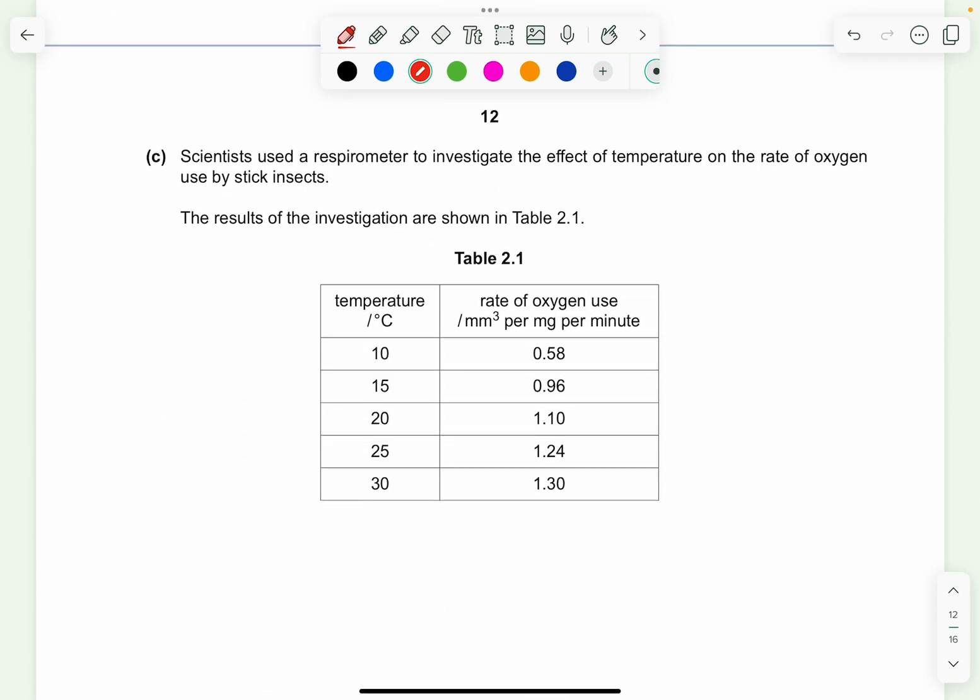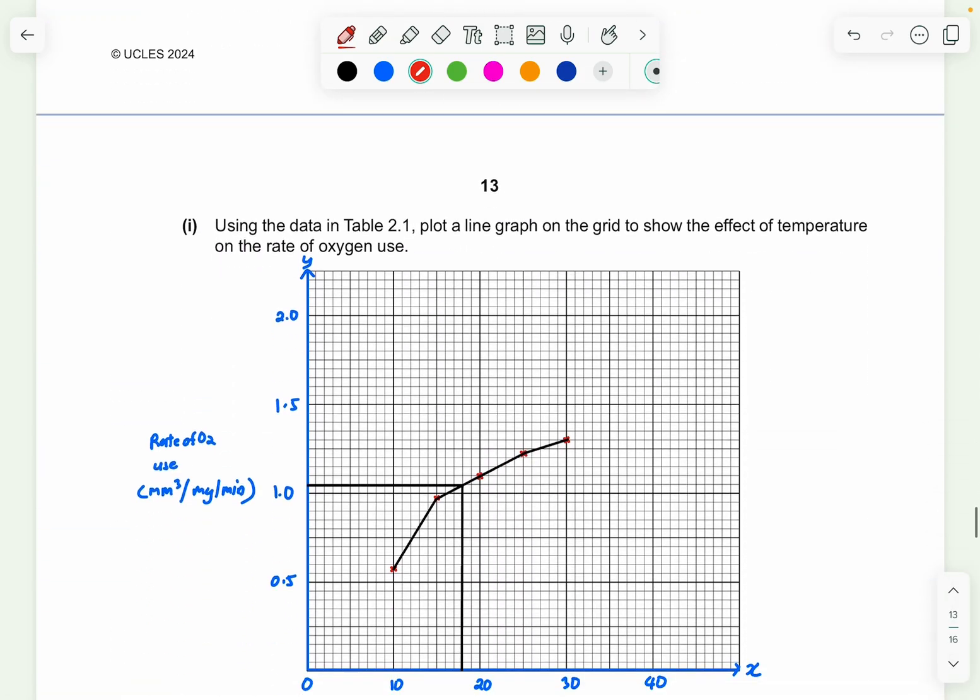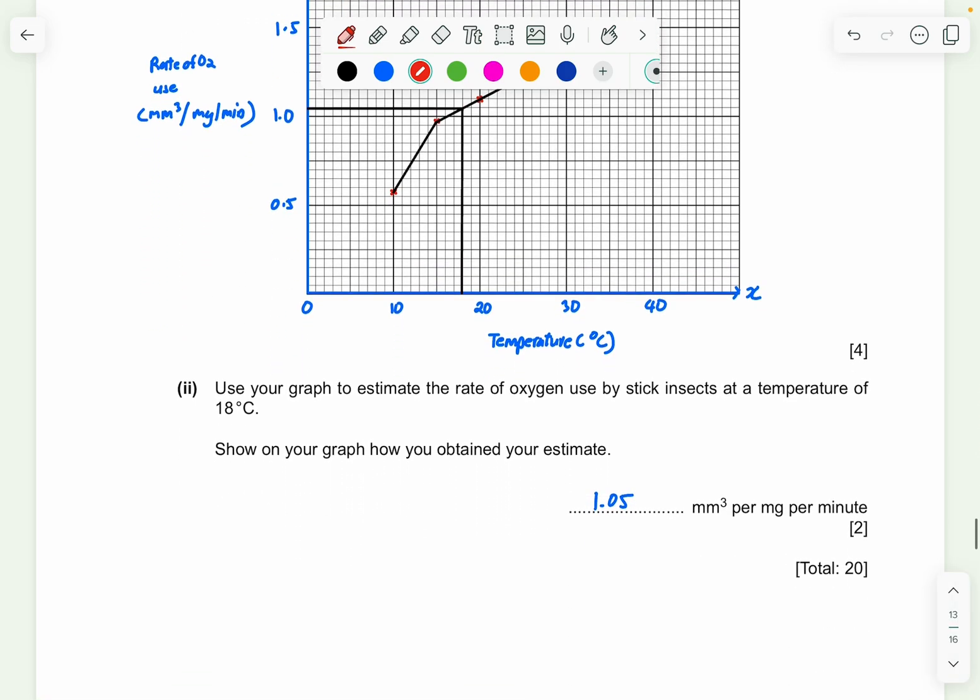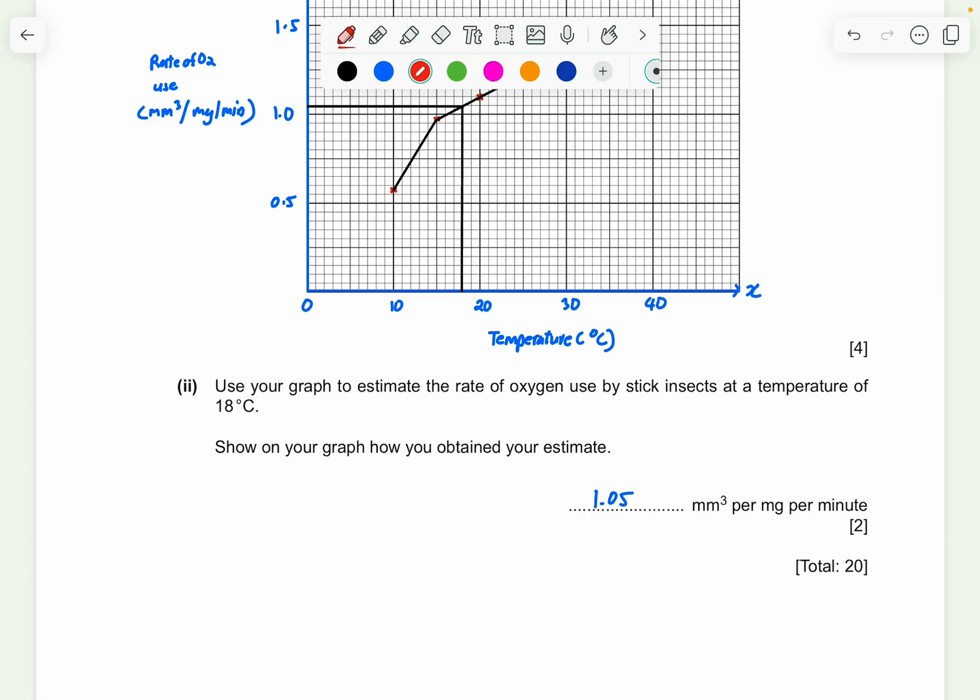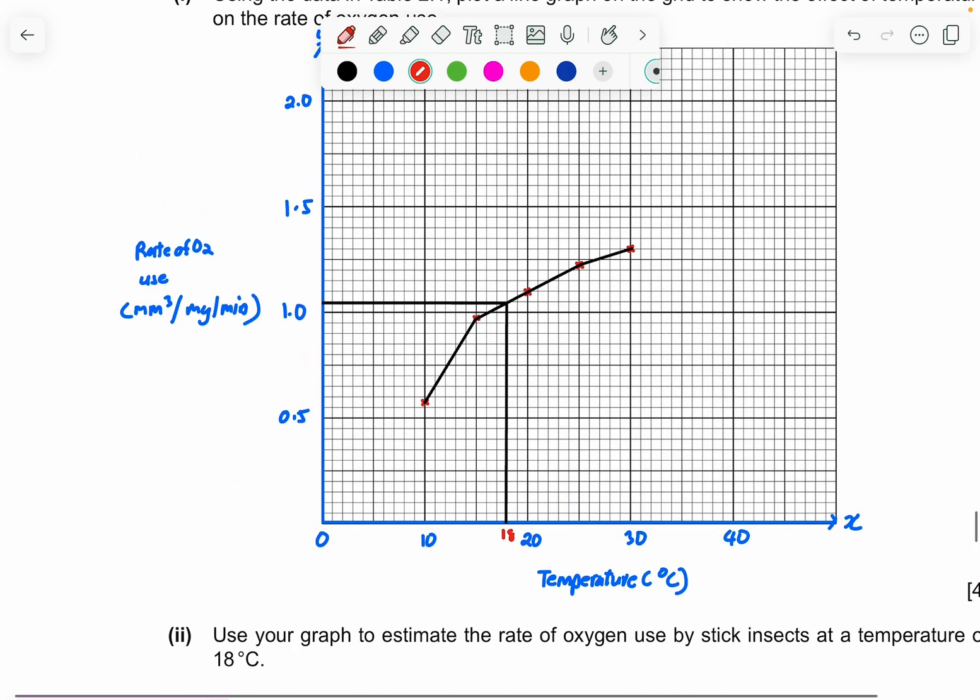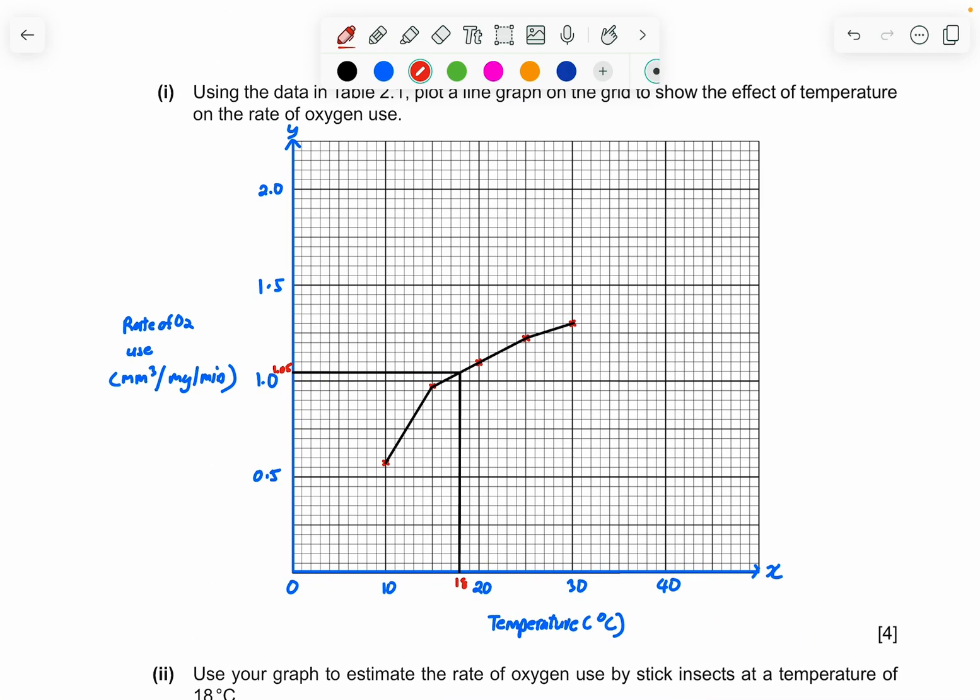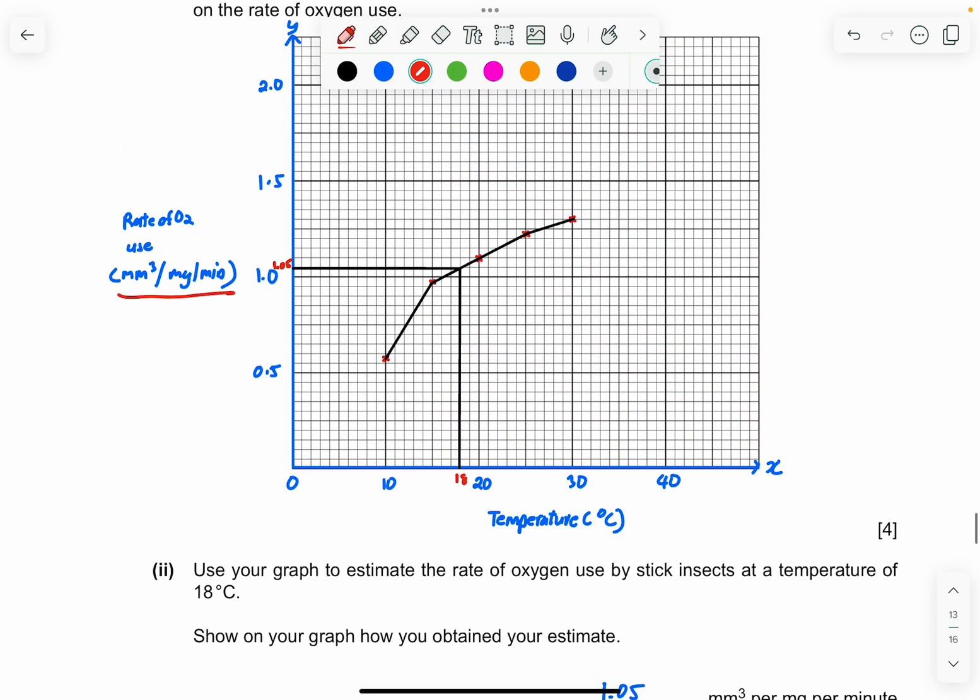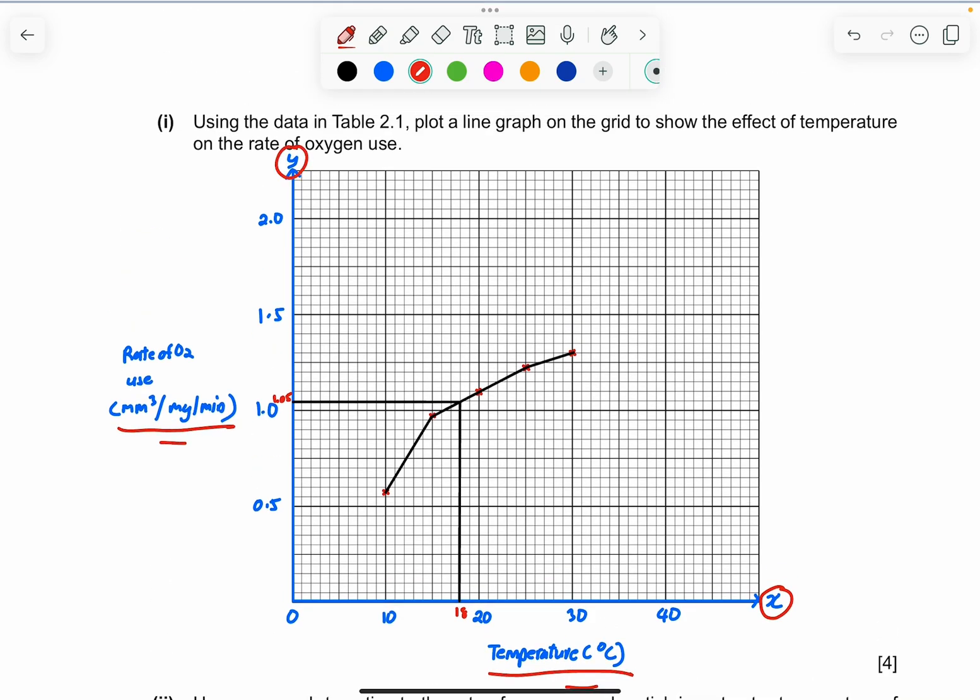Now part C, scientists use a respirometer to investigate the effects of temperature on the rate of oxygen used by stick insects. The results of the investigation are shown in table 2.1. So you can just draw. This is how the graph that I have done. So you can just use this as a form of reference. And then once you are done with this, you can use your graph to estimate the rate of oxygen used by the stick insect at the temperature of 18 degrees. So 18 degrees is about here. 18 for my side. And I'm getting about 1.05 as my rough estimate. So the answer is 1.05 millimeter cube per milligram per minute. So again, units are very important. And your axis has to be correct. Plot in the correct position. The line has to be correct. And all necessary details has to be added into it here also.